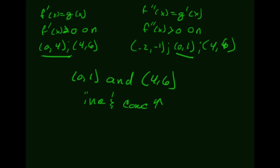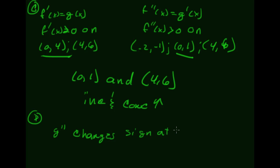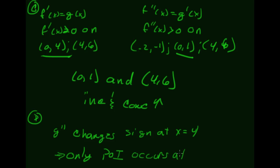Part d asks about points of inflection. We need g' — which equals f'' — to change sign. g' only changes sign at x = 4, where g goes from decreasing to increasing. Therefore the only point of inflection of f on the interval occurs at x = 4.